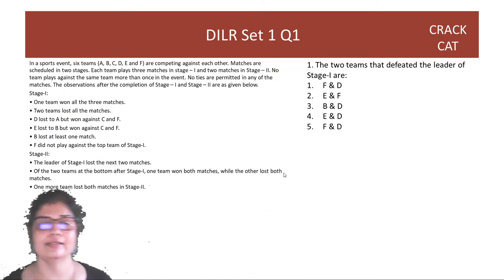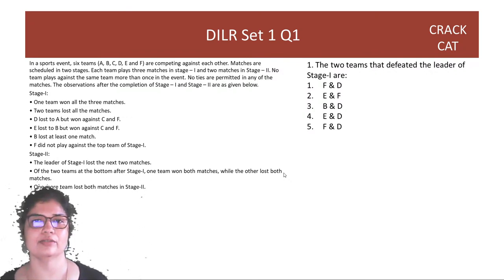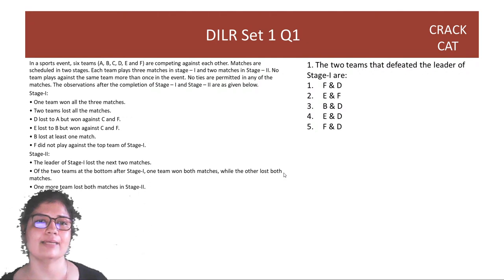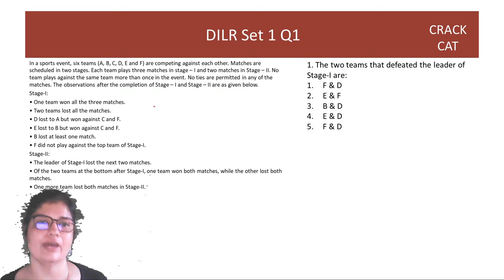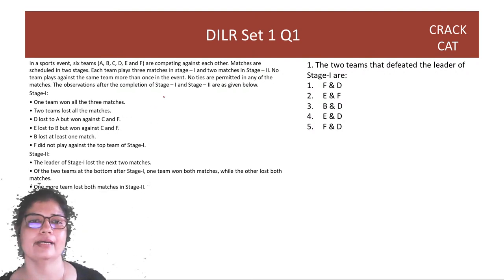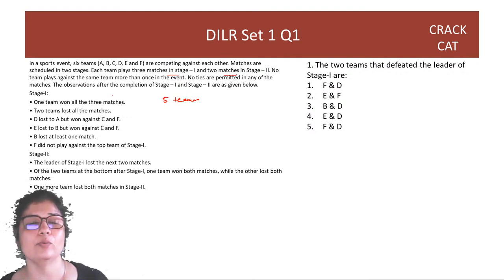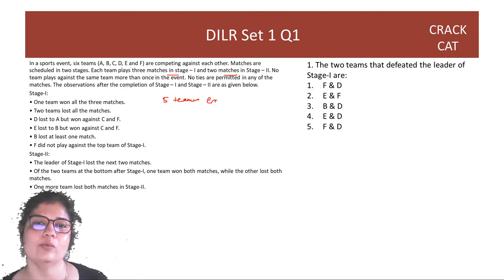Let's continue with the DILR set. You have a sports event where six teams are competing against each other. Matches are scheduled in two stages: first stage has three matches and second stage has two matches. No team plays against the same team more than once, meaning every team plays against every other team exactly once.